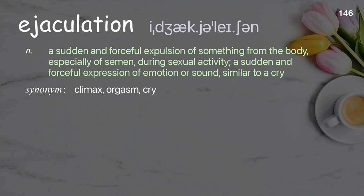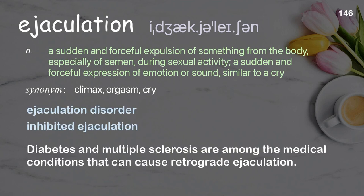Ejaculation: a sudden and forceful expulsion of something from the body, especially of semen, during sexual activity; a sudden and forceful expression of emotion or sound, similar to a cry. Examples: ejaculation disorder, inhibited ejaculation. Diabetes and multiple sclerosis are among the medical conditions that can cause retrograde ejaculation.